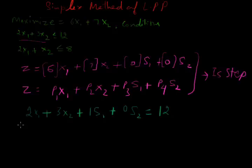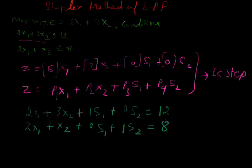At the same time we will write 2x1 plus x2 plus 0s1 plus 1s2 is equal to 8. We can show it as a 2 by 2 matrix.